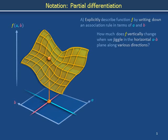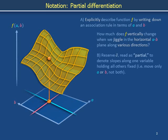It is helpful to introduce language that lets us specify directions in the a-b plane along which to calculate the slope of f. To this end, we introduce the curly d symbol called a partial. The partial refers to a derivative taken along one of the variables explicitly written down in the association rule while holding all other variables in the association rule constant.